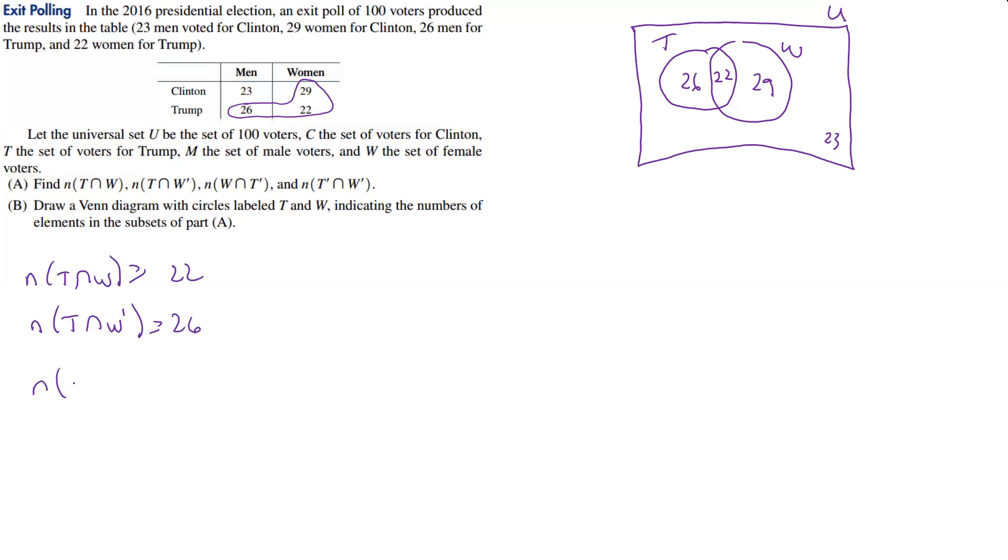Now we want the number of W intersect T prime. When we do that one, how many are not in T and are W's? That's 29.